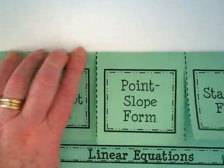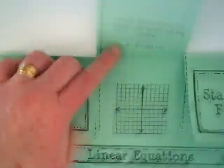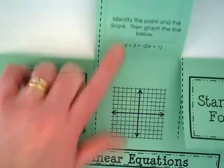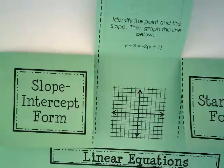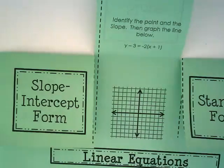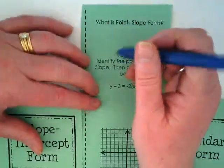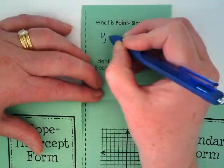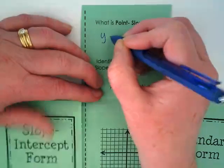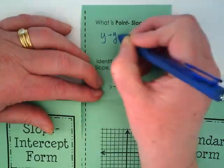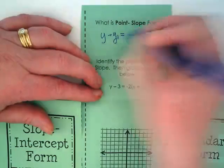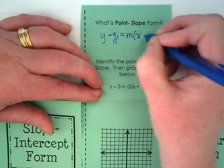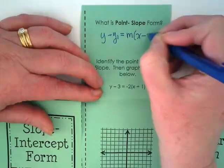Now we're going to do it with point-slope form. Point-slope form is the one that is the most confusing-looking. We have y minus y sub one is equal to the slope times x minus the x sub one.